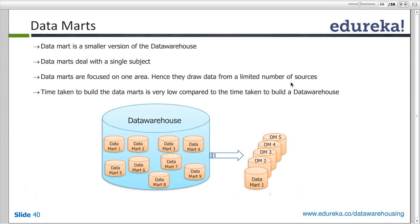A data warehouse is basically consolidated data from different source systems — it's an enterprise-wide view, a collection of data from different departments of an enterprise. A data mart is a very specific, smaller version of a data warehouse.